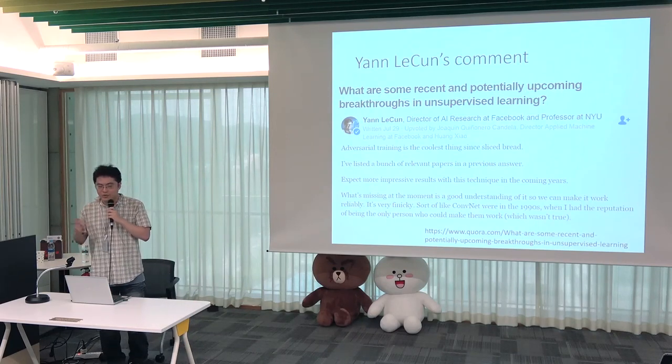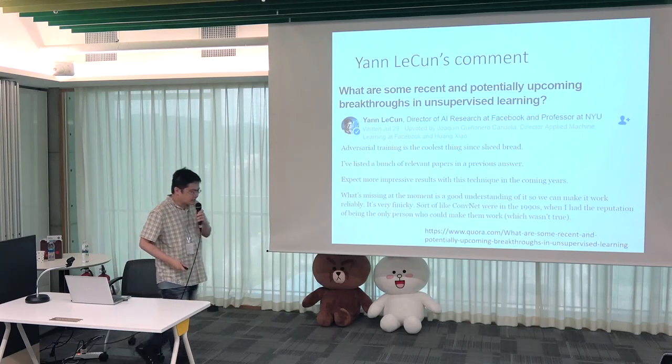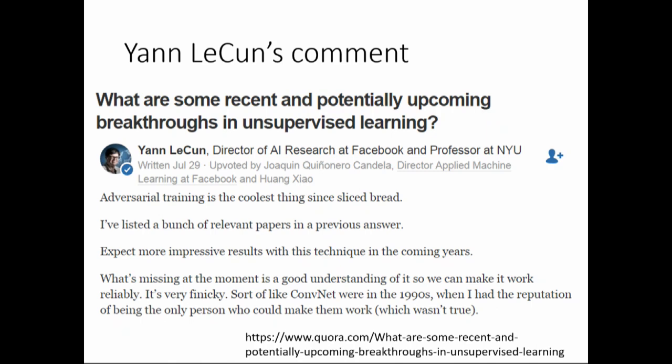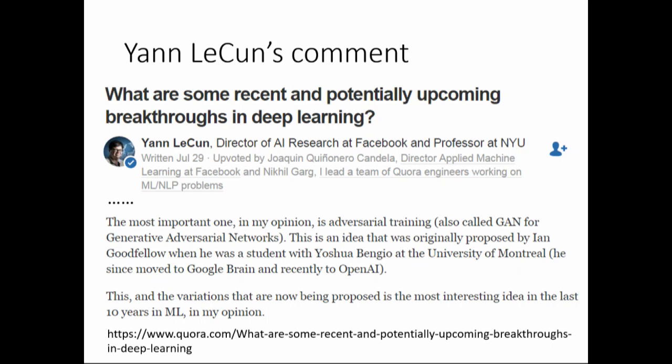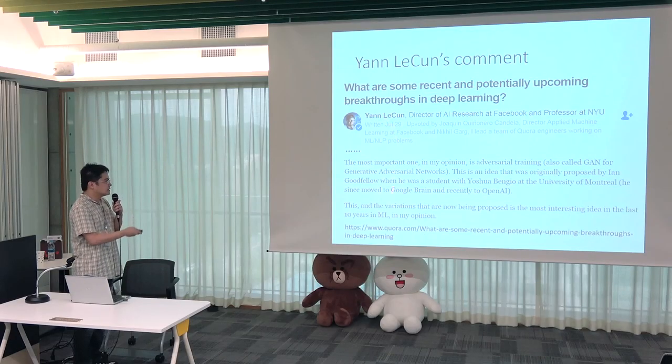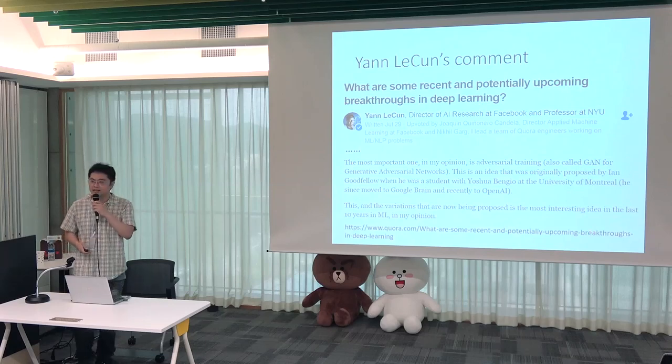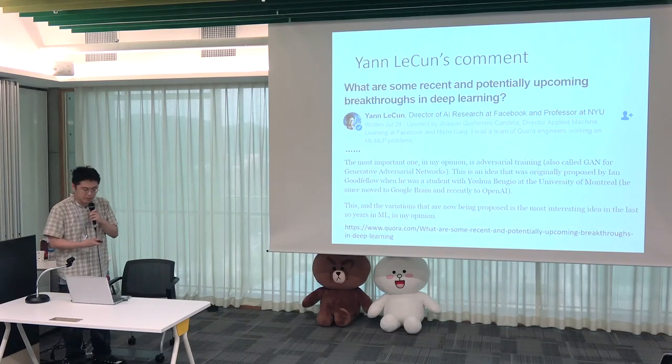For those who have never heard the word GAN before, let me show you this slide to show how important this technology is. This is a post on Quora where someone asked about upcoming breakthroughs in unsupervised learning. Yann LeCun said adversarial training is the coolest thing since sliced bread. And in another post about deep learning breakthroughs, he said GAN and its variations are the most interesting idea in the last 10 years in machine learning.